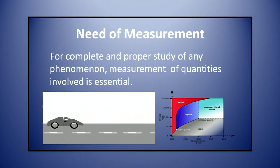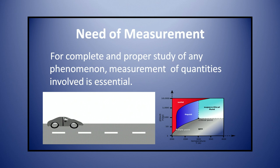So what is the need of measurement? For complete and proper study of any phenomenon, measurement of quantities involved is essential. For example, to study the motion of a particle, measurement of its displacement, velocity, and acceleration at any instant has to be made accurately. For this, measurement of time and distance has to be done. Similarly, measurement of volume, pressure, and temperature is necessary to study the state of a gas fully. Thus, we find that measurement of quantities such as distance, time, temperature, mass, force, etc. has to be made to study every natural phenomenon. This explains the need for measurement.